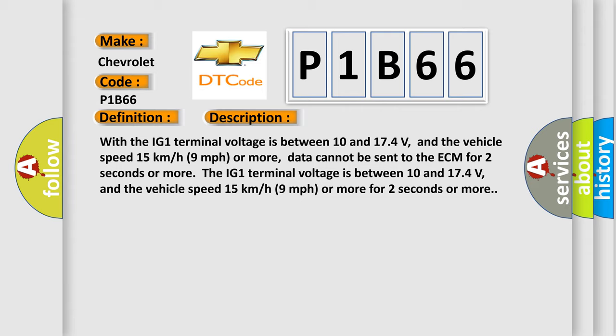The IG1 terminal voltage is between 10 and 174 volts, and the vehicle speed 15 kilometers per hour or 9 miles per hour or more for 2 seconds or more.